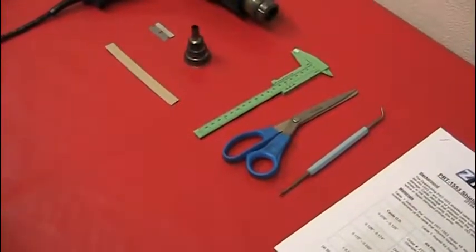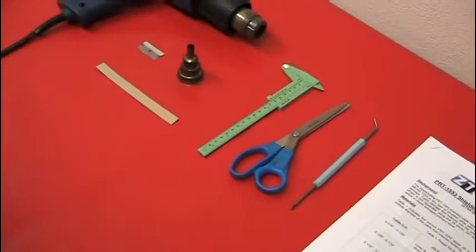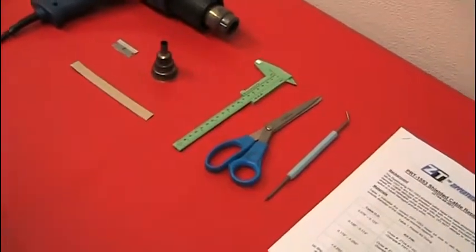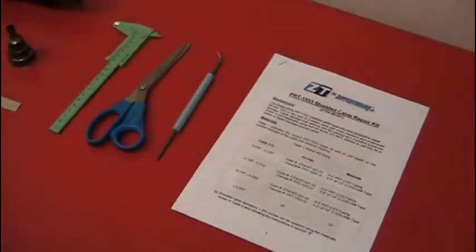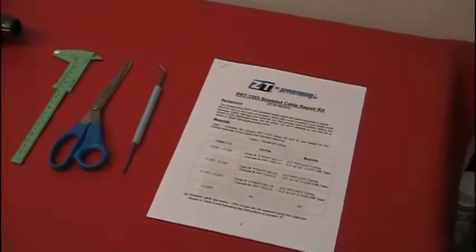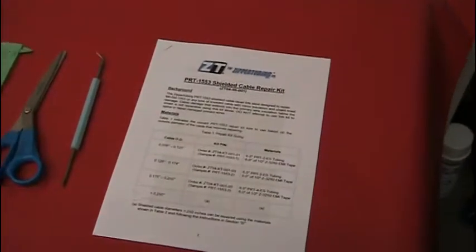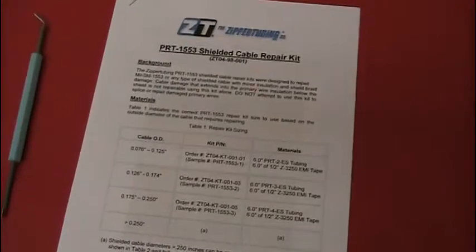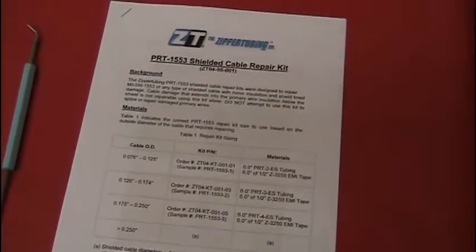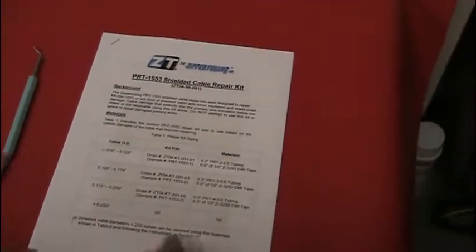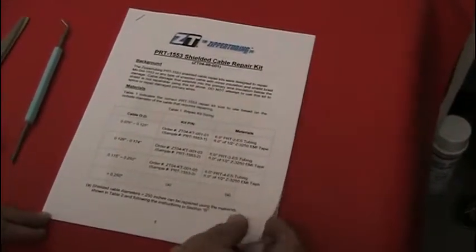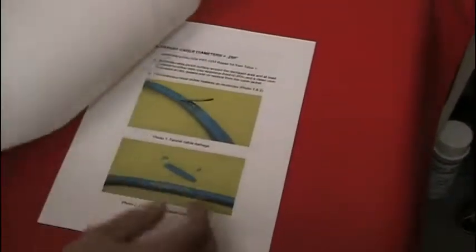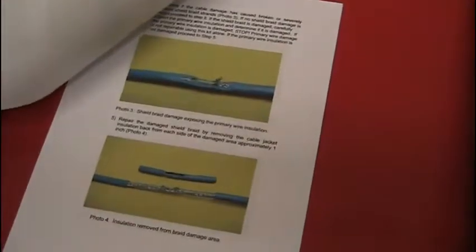This is a demonstration of Zipper Tubing's PRT-1553 Shielded Cable Repair Kit. The installation instructions can be found on ZipperTubing.com. It's very important that you download these instructions. There are sizing tables and detailed instructions for how to install and make these type of repairs.